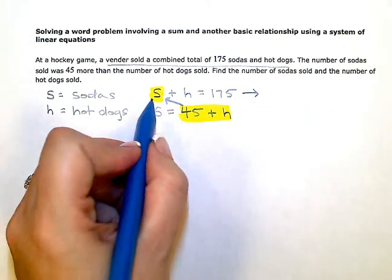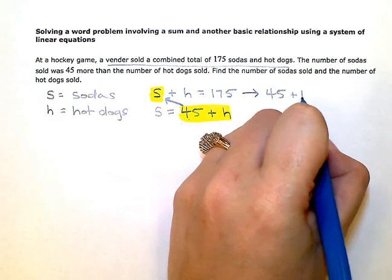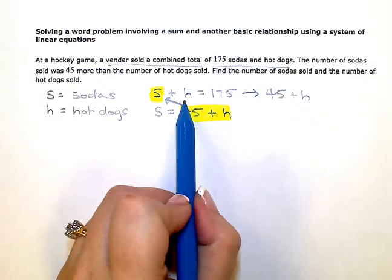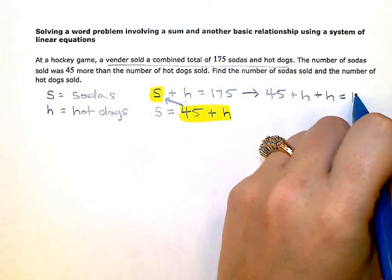So if I rewrite this, instead of S, I'm going to put 45 plus H, then I have another plus H, and that is equal to 175.